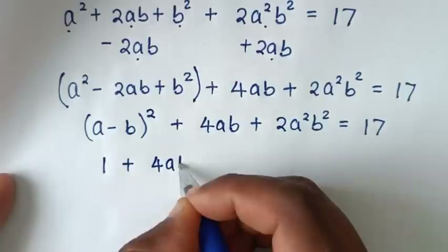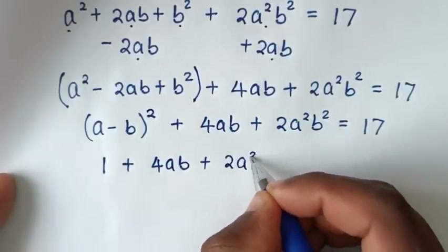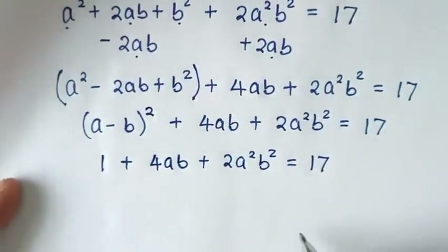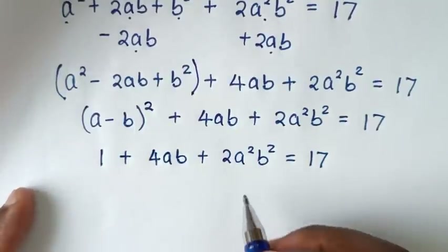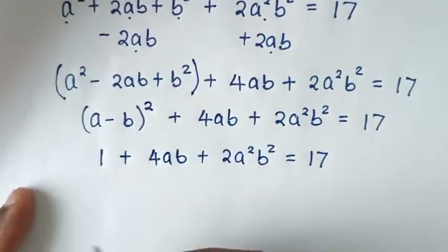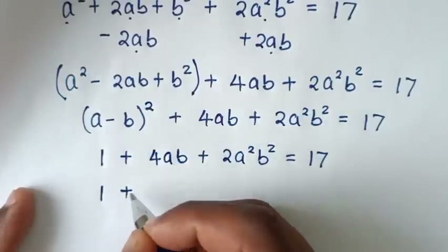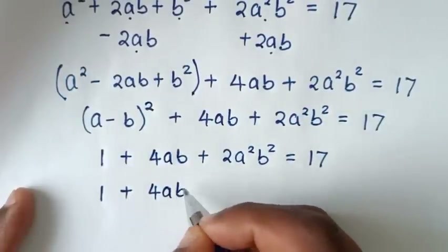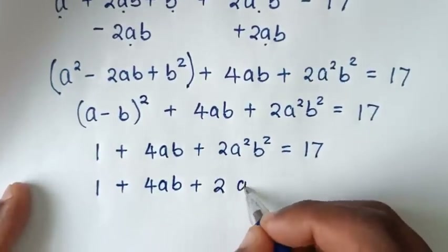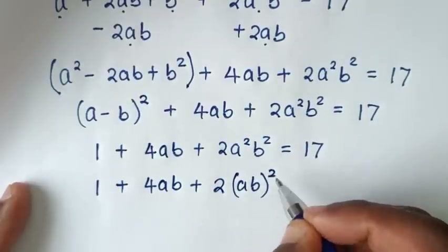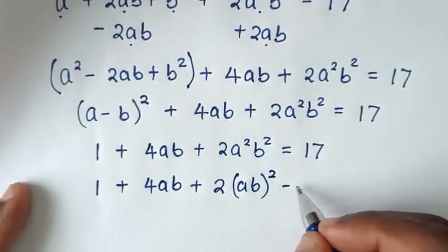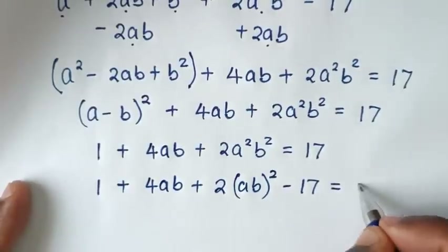Then in the next step, from here, a²+b² becomes 1, then plus 4ab, then plus 2a²b², which is the same as (ab)². Then we take 17 to this side, so it will be minus 17, equals 0: giving 2(ab)² + 4ab + 1 - 17 = 0.